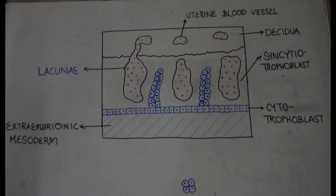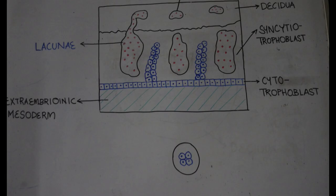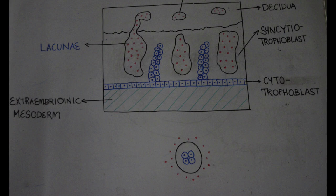The trabecula thus comes to have a central core of cytotrophoblast covered by an outer layer of syncytium. It is surrounded by maternal blood filling the lacunae space. The trabecula is now called a primary villus, and the lacunae space is now called the intervillus space.